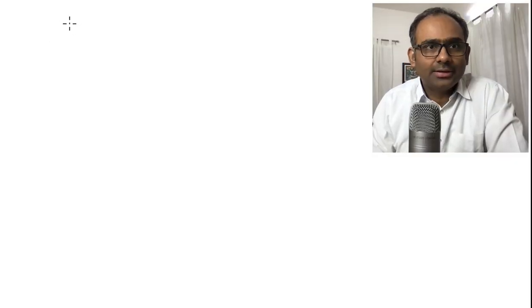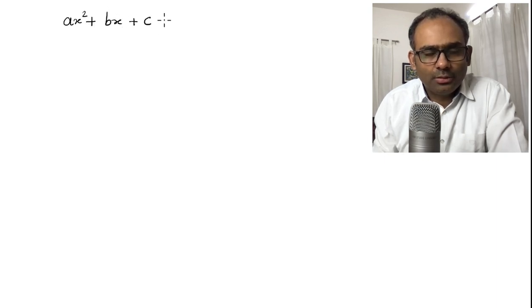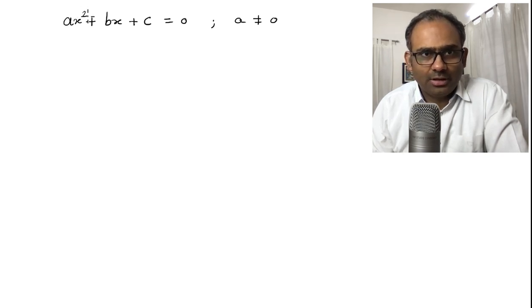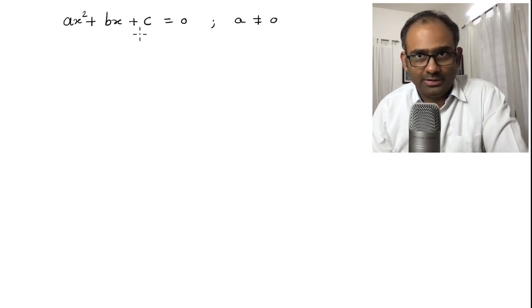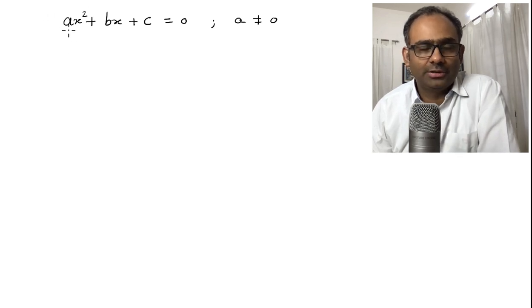The most general quadratic equation is ax square plus bx plus c equal to 0 where a is not equal to 0 because if the constant a is equal to 0 then this term is gone and you have only this piece left which means you have a linear equation but we are considering quadratic equation. So, a should not be 0.